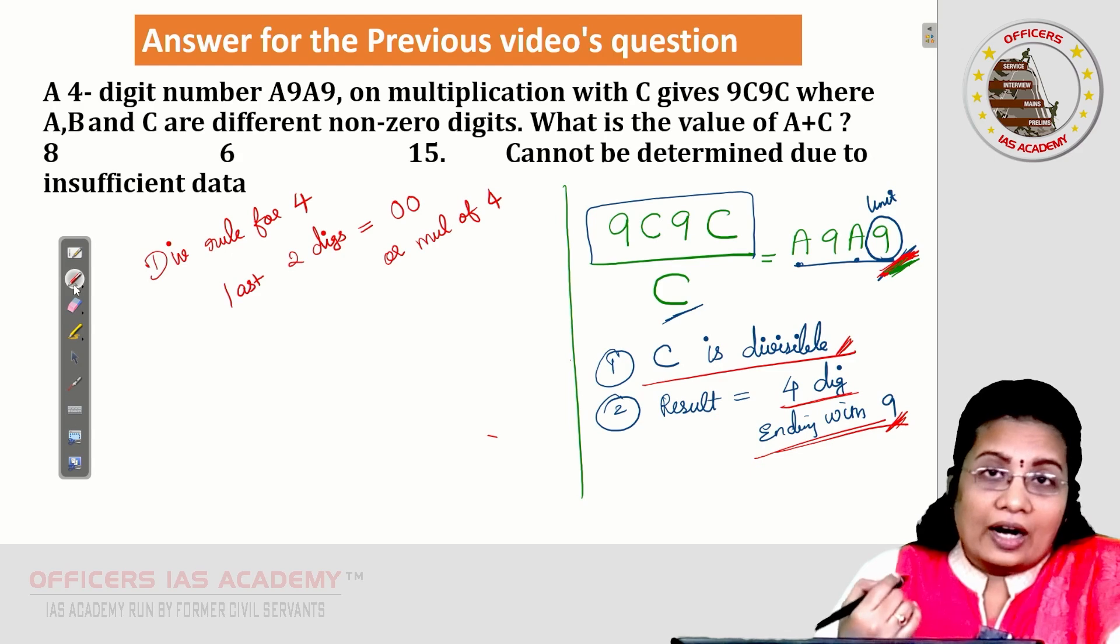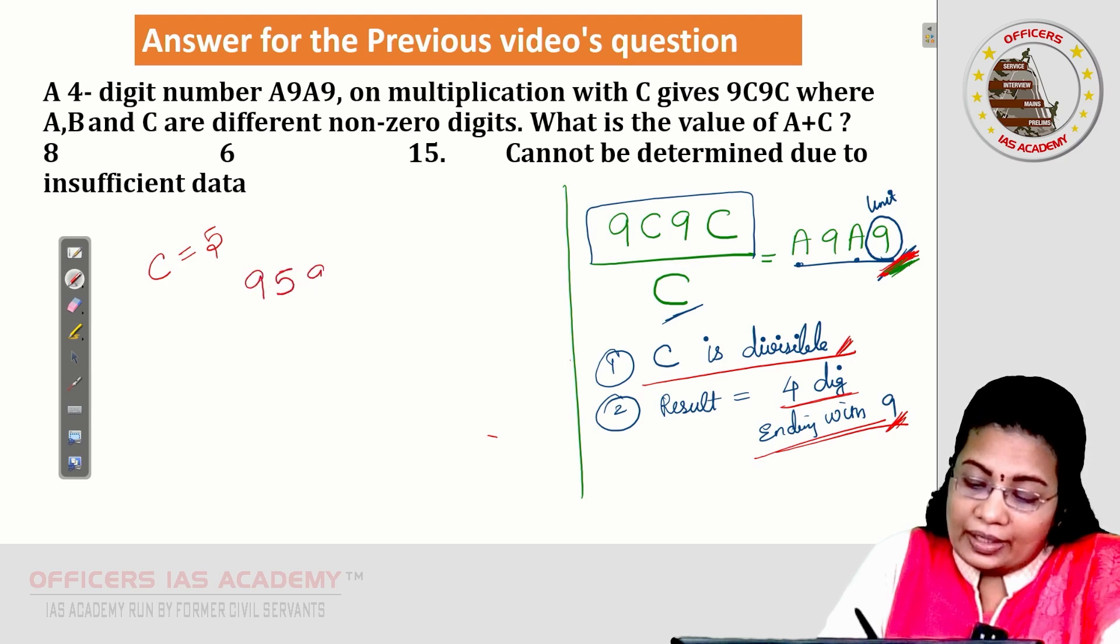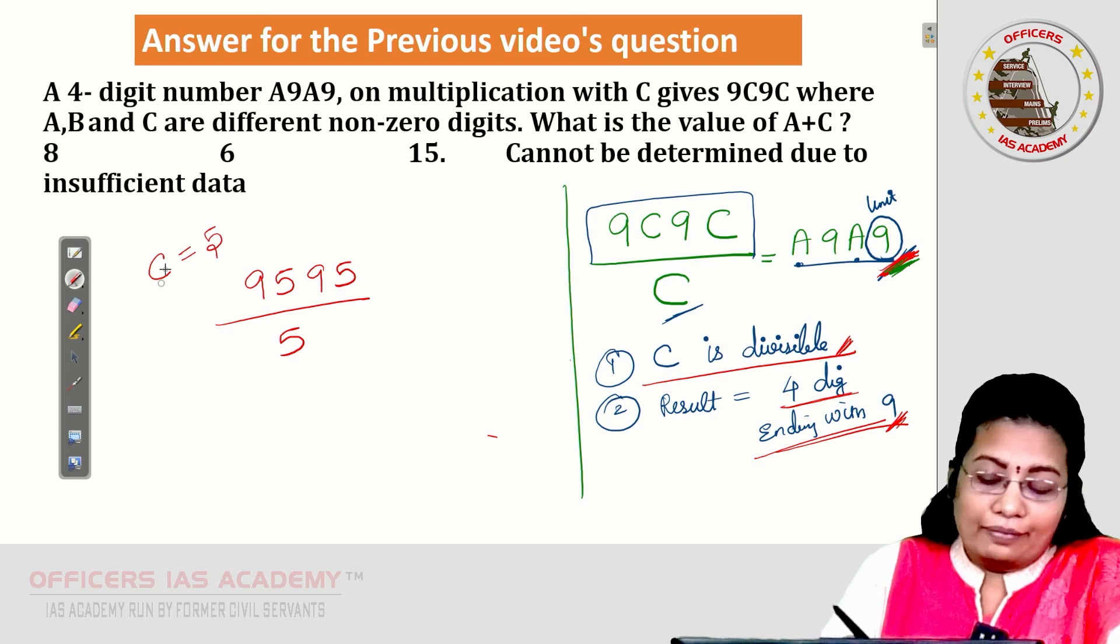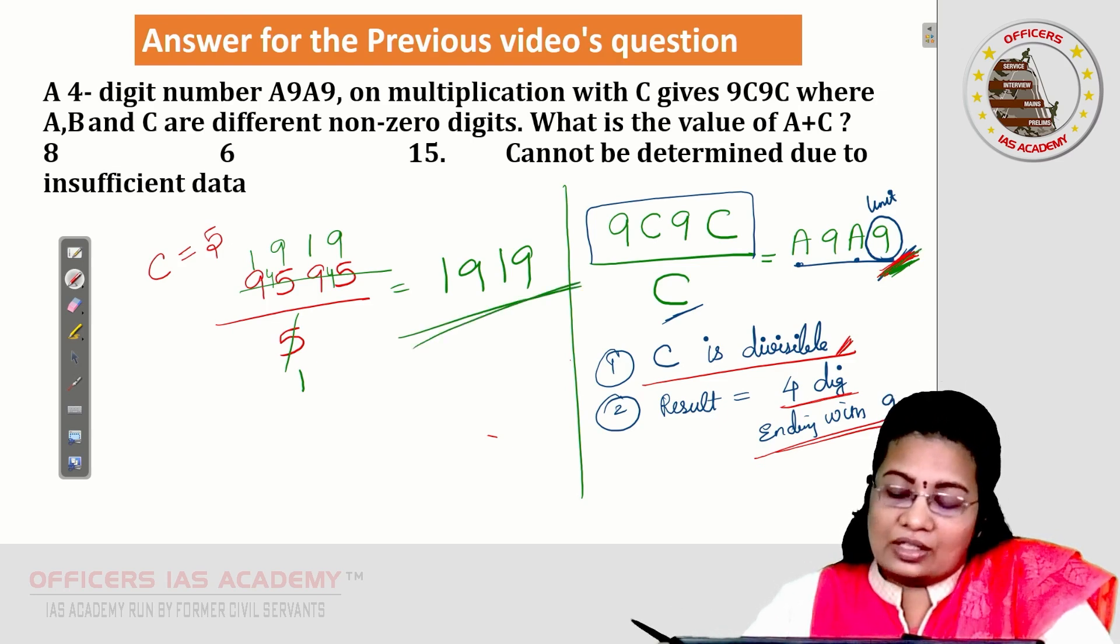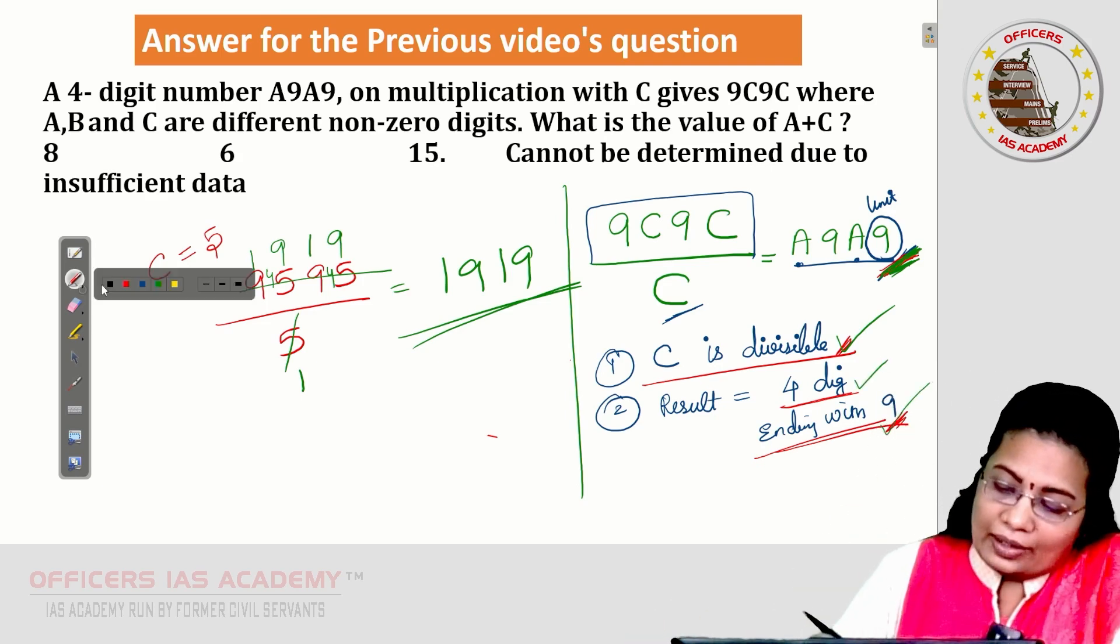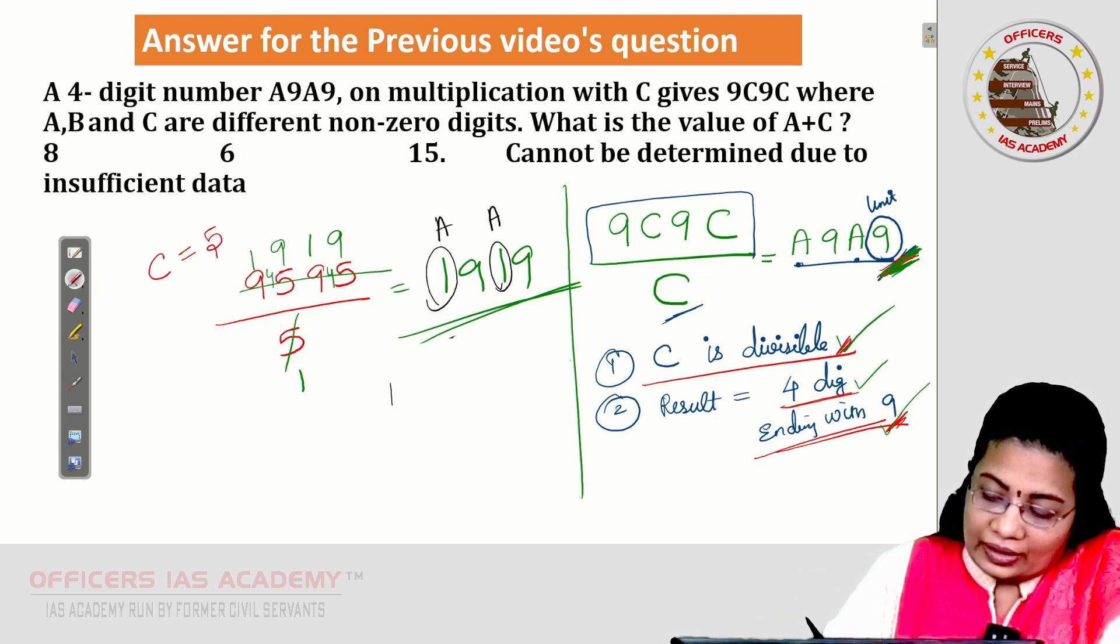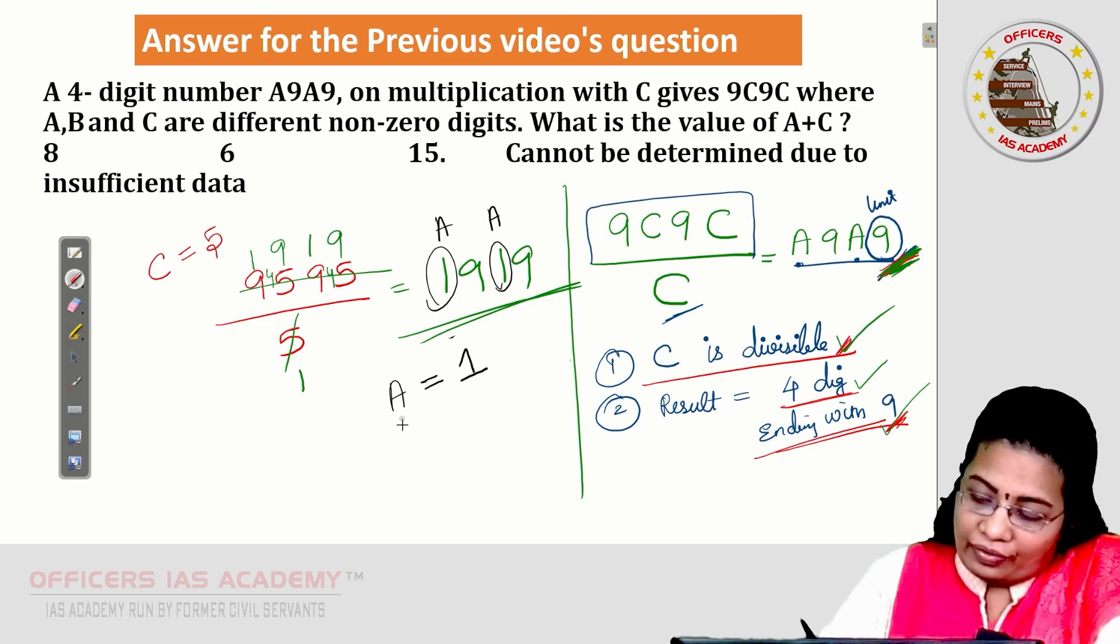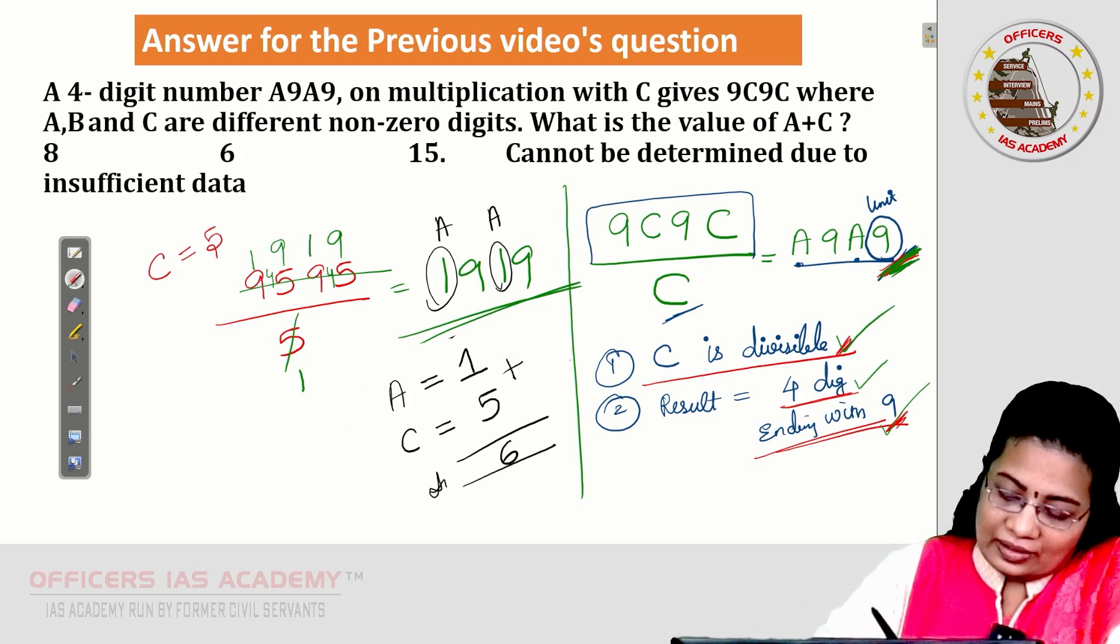Now, let me take the next case. Let me substitute C is equal to 5. 9595 divided by 5. What is the answer? 1 times 5. Here, 1 times 5 balance 4. 9 times 5, 45. Again, 1 times 5, 5 balance 4. 9 times 5, 45. Yes, I got 1919 as the result. It satisfies the condition. C is divisible. Yes. And the result is 4 digits. Ending with 9, yes. Based on this, I can take what is A going to be? This is A. This is the value for A. I can confirm A is 1 and C is going to be 5. What is the value for A plus C? The answer is 6. That is all.